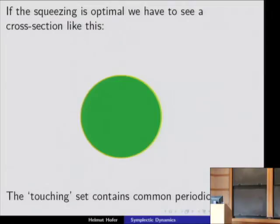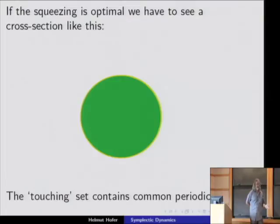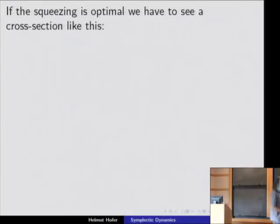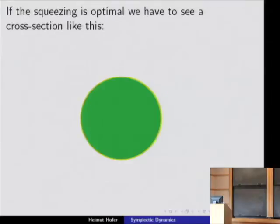This touching set has a common periodic orbit. If you have an autonomous Hamiltonian system, the energy is preserved. If you have a co-orientable hypersurface, you can find a Hamiltonian having it as an energy surface. If you take two Hamiltonians with the same energy surface, the only difference is the time-parametrization of orbits. So you can talk about periodic orbits on an energy surface without reference to a Hamiltonian system. We have two hypersurfaces: the boundary of the cylinder and the squeezed domain. We can talk about periodic orbits on them, and they must coincide.